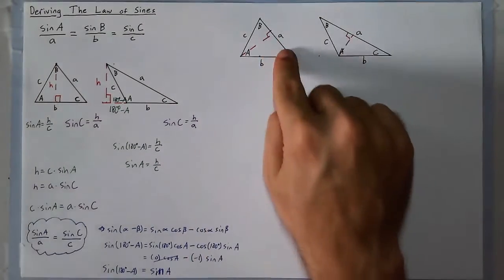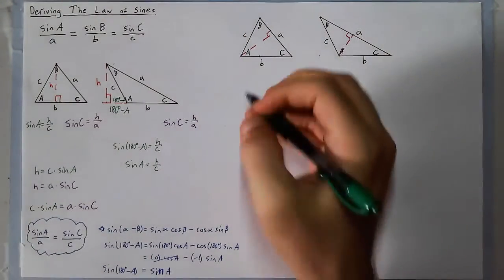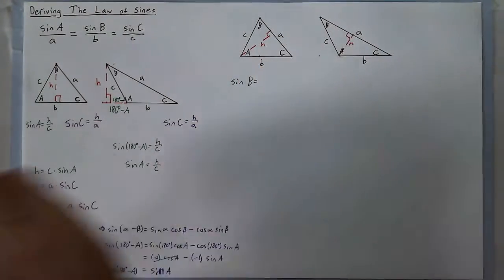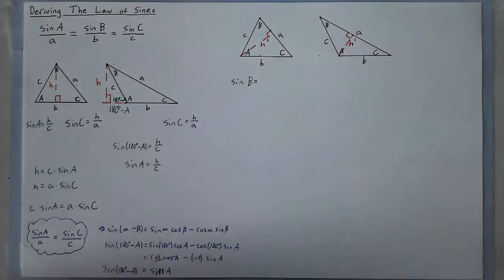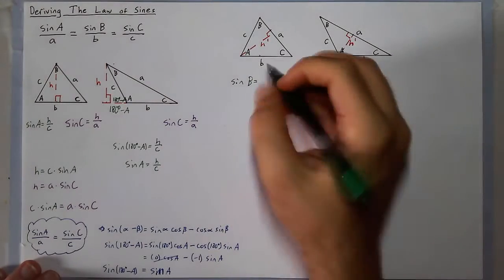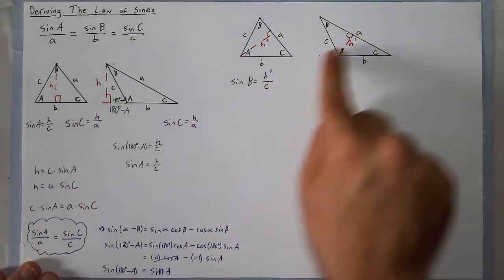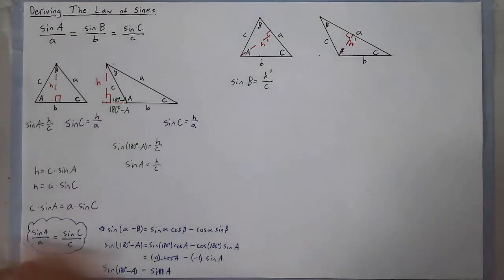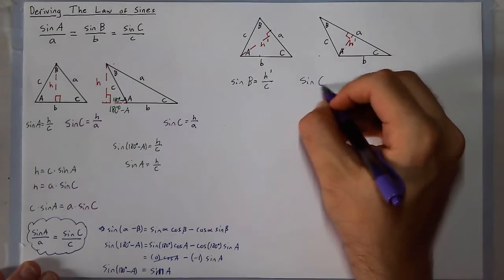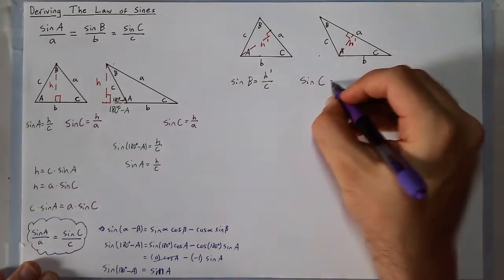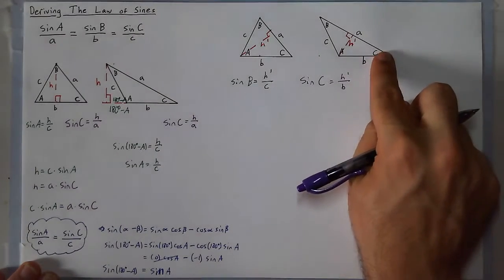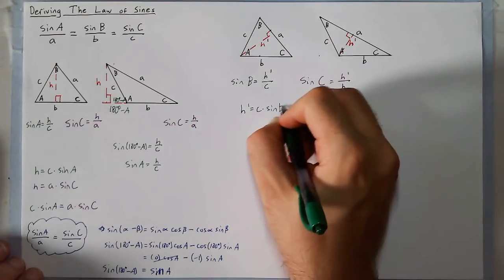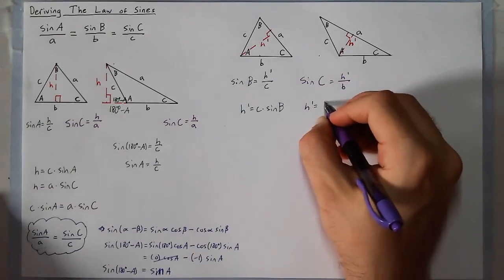Now using the other two angles — sine of B and sine of C — I can see that for the acute triangle, sine of B equals H prime over c. The same is true for the obtuse triangle: sine of B equals H prime over c. I can also see that sine of C equals H prime over b, and this holds in the other triangle as well.